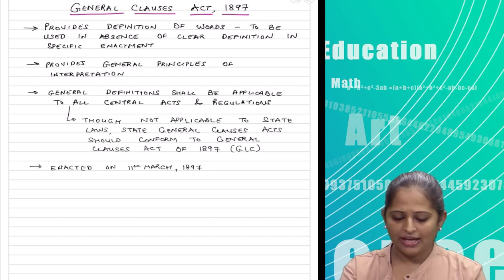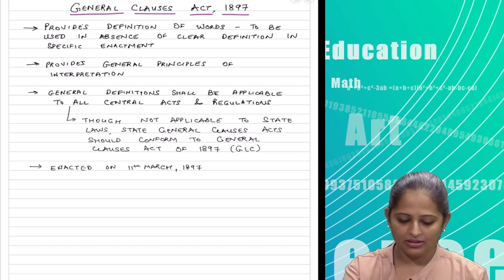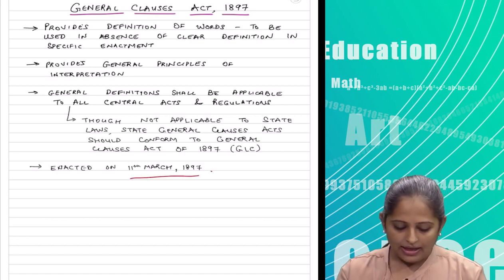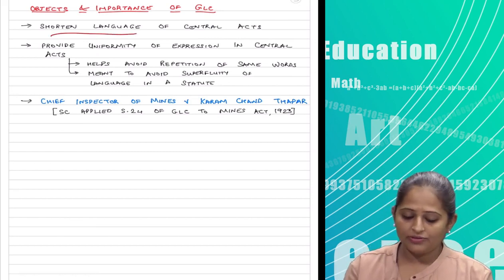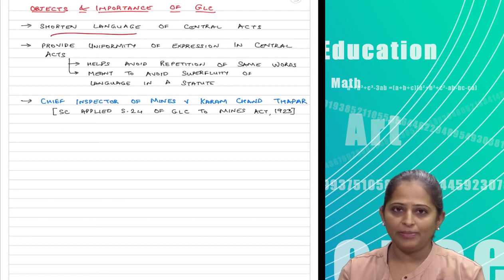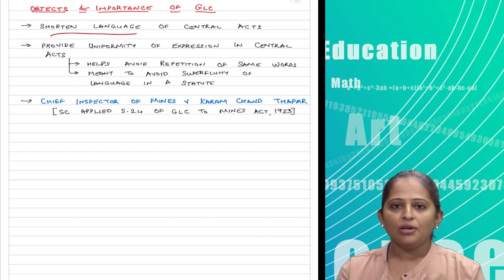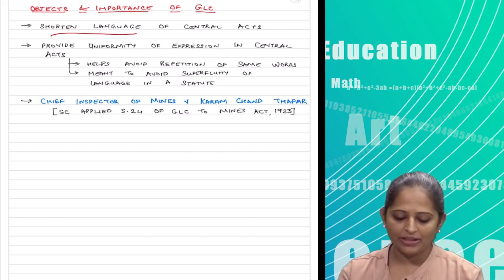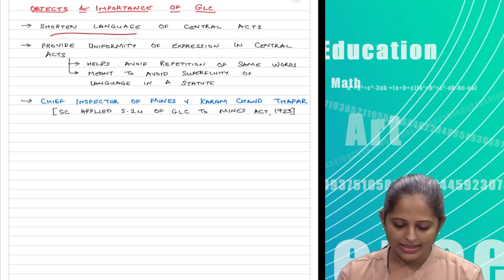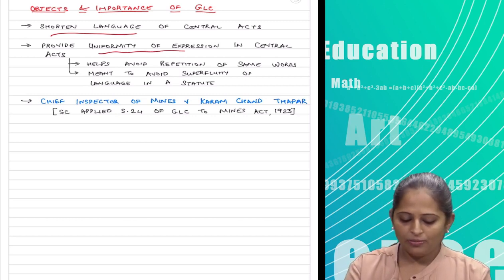The act came into force on 11th March 1897. Its object is to shorten the language of the Central Act. It applies only to the Central Act and does not apply to state laws. However, state laws are in sync with the Central Act, so they cannot go against it. Though it is applicable only to the Central Act, the state laws are effectively in sync with the General Clauses Act, and it provides uniformity of expression.